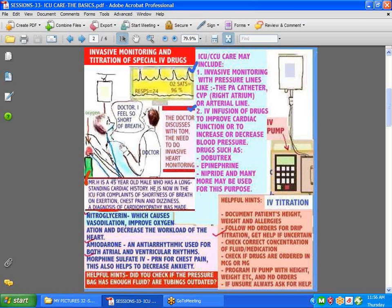Bear in mind like I gave you an example of this patient who has a long-standing cardiac history. He's now in the ICU complaining of shortness of breath on exertion, chest pain, and dizziness, and a diagnosis of cardiomyopathy was made. Such a patient may very readily have a PA catheter inserted and be put on drugs like nitroglycerine, which helps to improve oxygenation and decrease the workload of the heart. An antiarrhythmic like amiodarone, which actually can be used for either atrial or ventricular rhythms. And morphine sulfate might be titrated in small doses for pain.